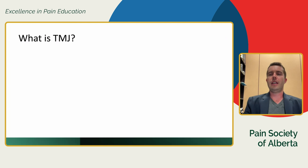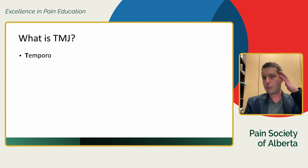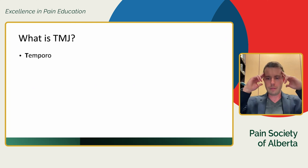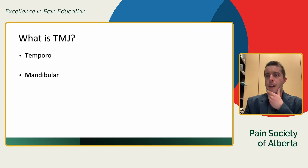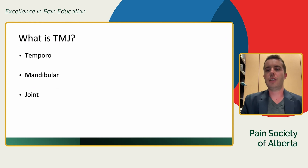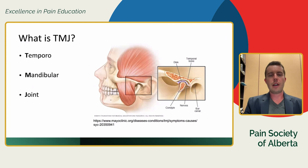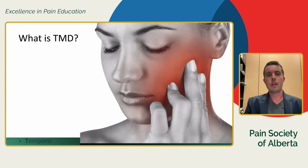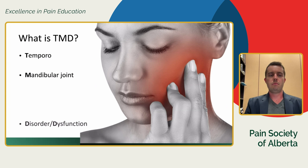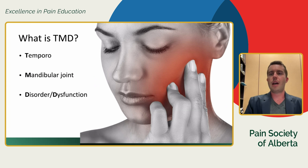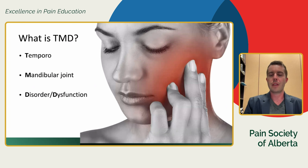TMJ is an acronym — it stands for temporomandibular joint. 'Temporal' refers to our temporal bone up where our temples are; 'mandibular' references our mandible, which is our lower jaw. There's just one mandible, but two joints — one on either side. I always jokingly tell patients that everybody has TMJ. When we talk about actual problems — be it pain, clicking, or inability to chew — we're talking about what we call TMD: temporomandibular disorder.